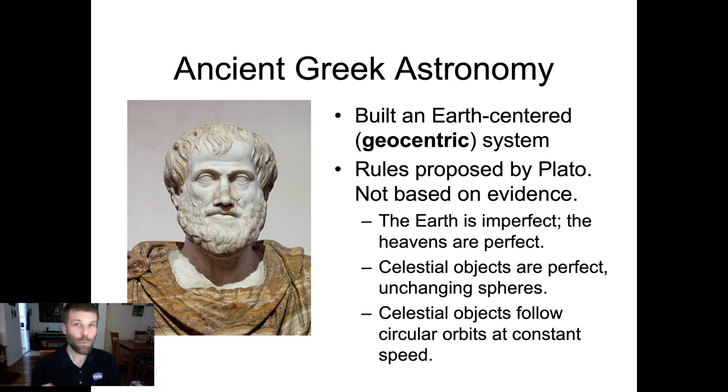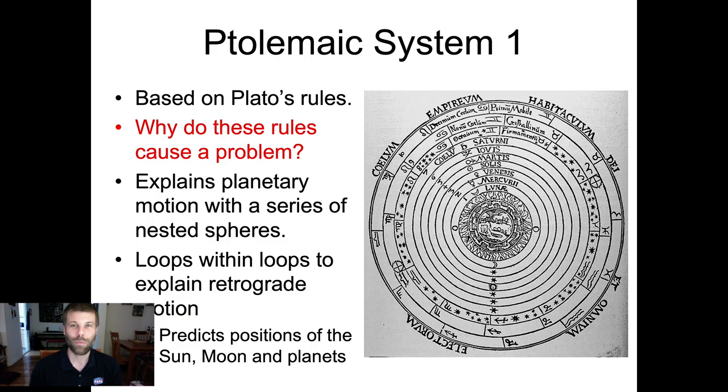Now, if you're paying attention, you might have already spotted a problem. I'll give you a second to think what that problem could be, and then I'll tell you what it is. Have you figured it out yet? Well, if you've got a system based on Plato's and Aristotle's rules, you have to have planets traveling at constant speed and they have to undergo apparent retrograde motion. So what the heck? How do you do that?